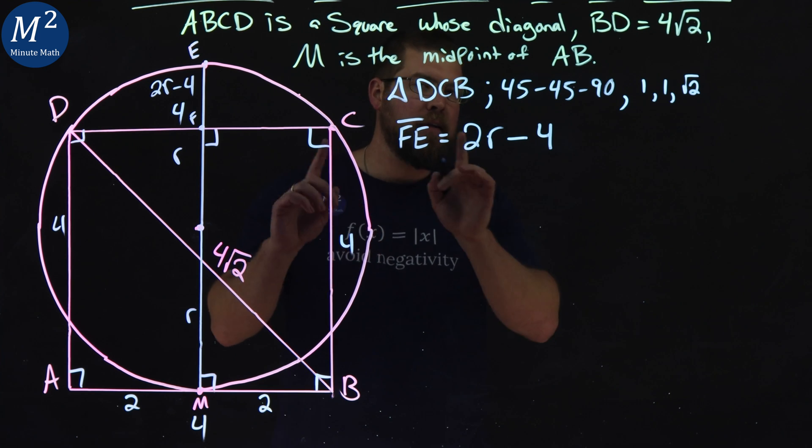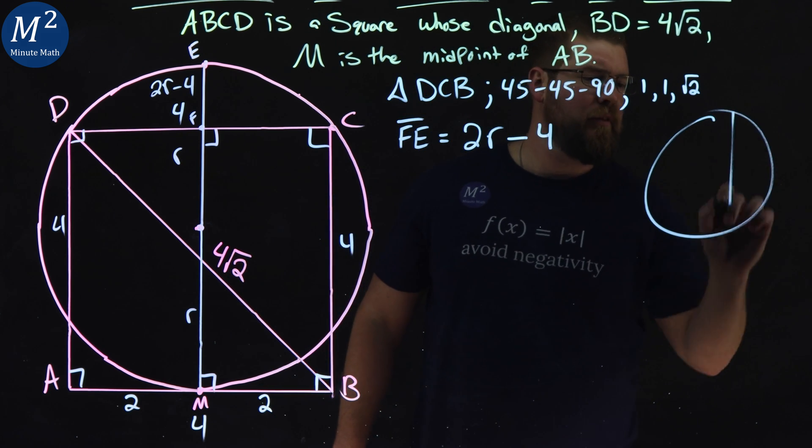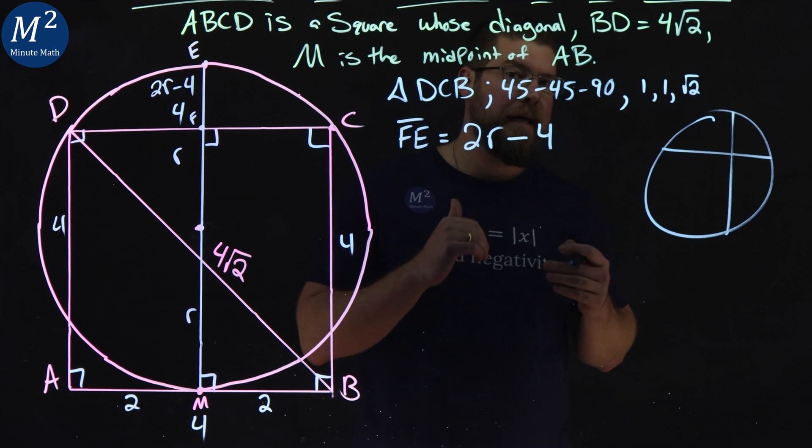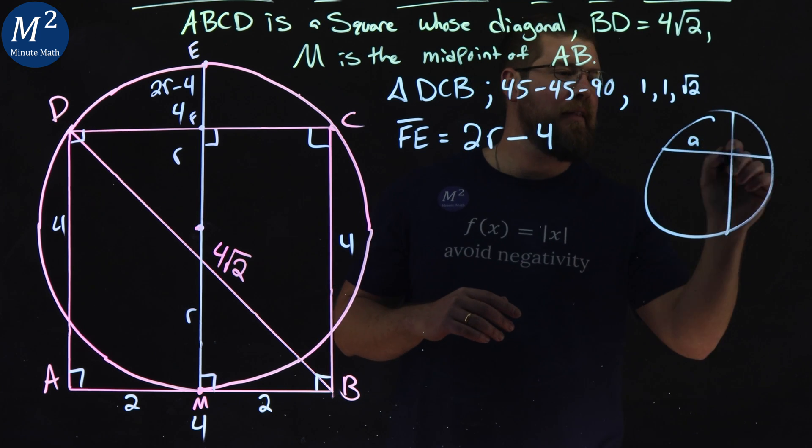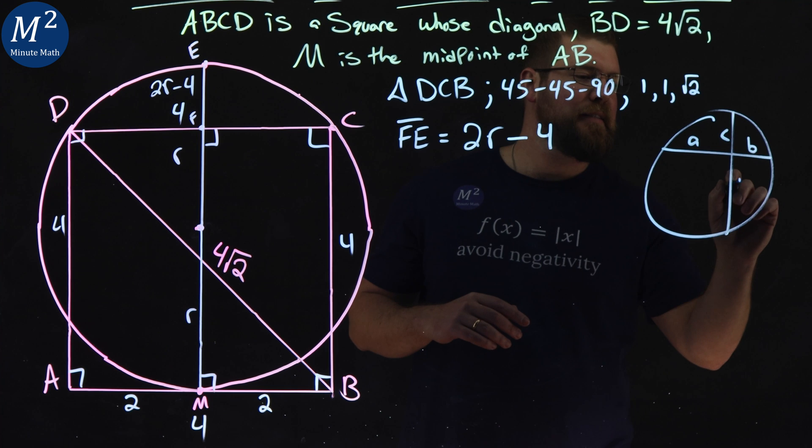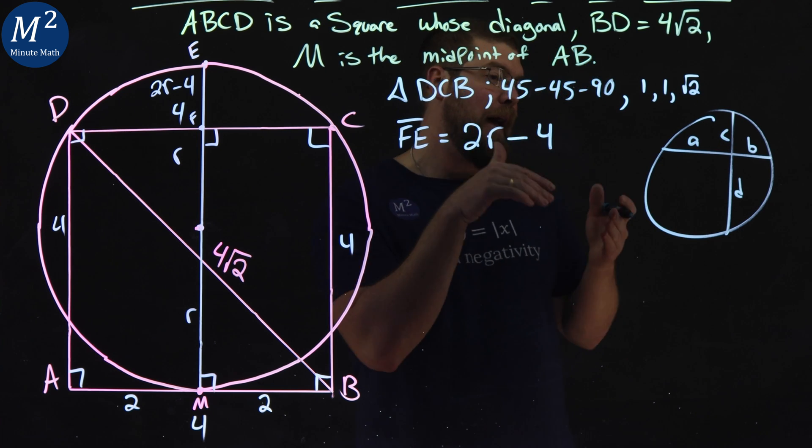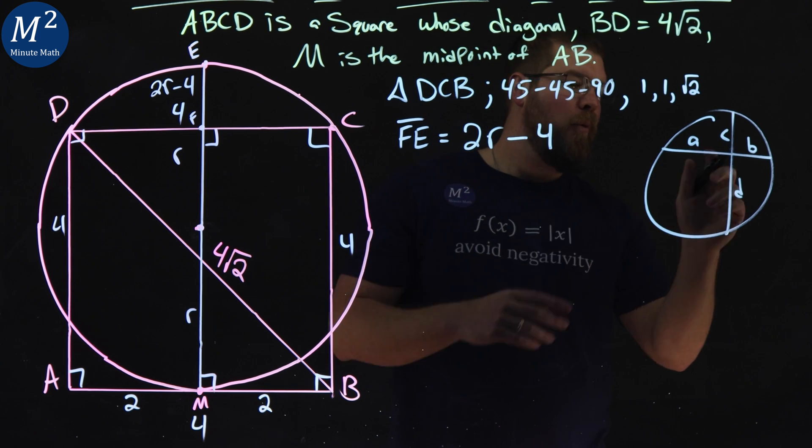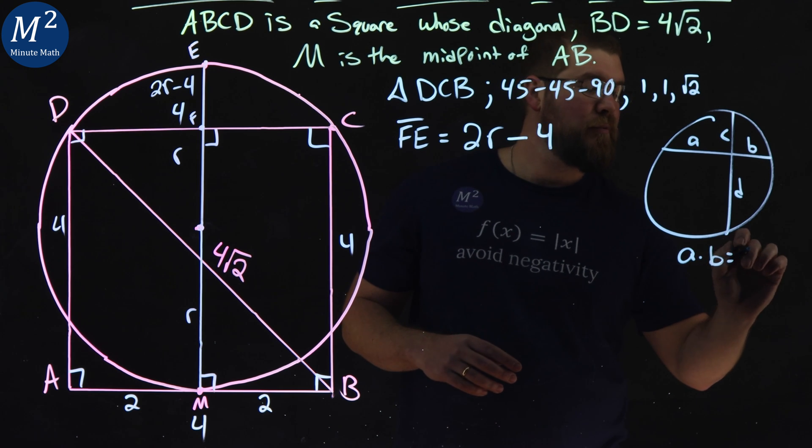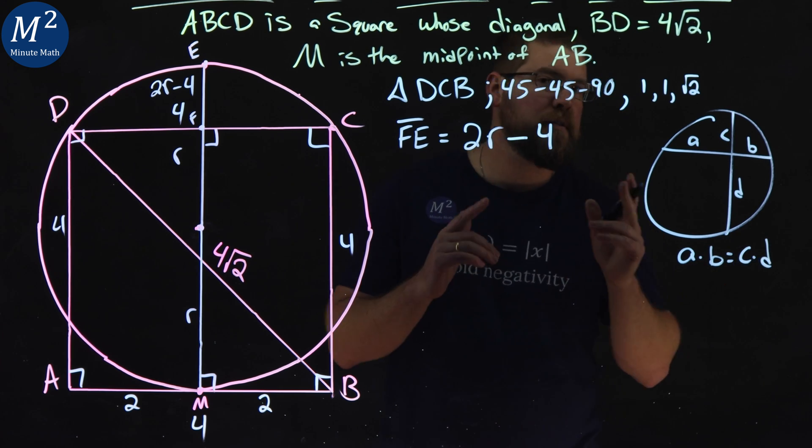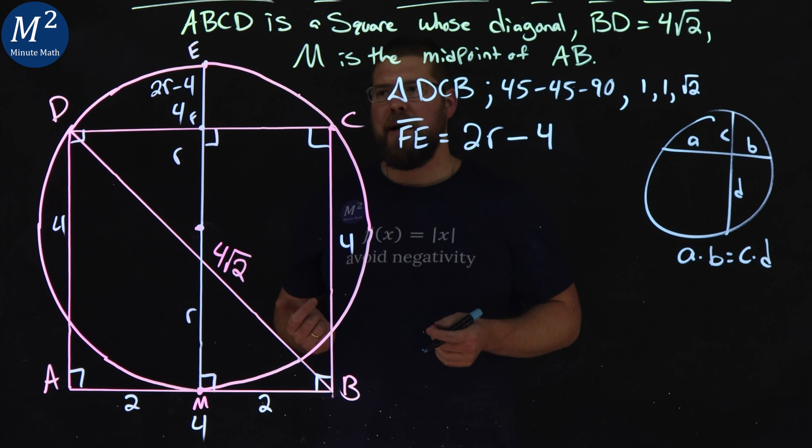Now this is the tricky part. Here's called the intersecting chords theorem. We draw a circle here. We have two chords that intersect. Let's call the side length AB and CD. They tell us if we have two intersecting chords, what we can write here is A times B is equal to C times D. Intersecting chords theorem.